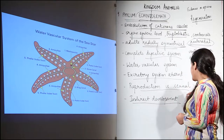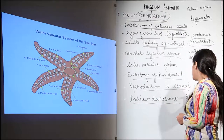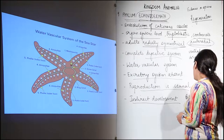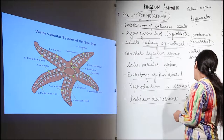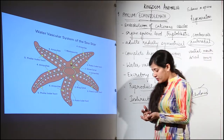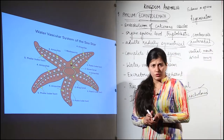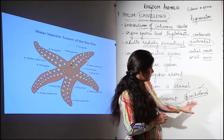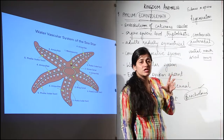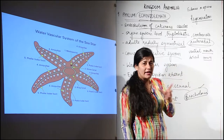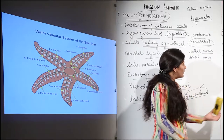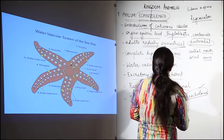They have indirect development. As mentioned, the larva is bilaterally symmetrical, and it is called the brachiolaria larva. If you can remember the name, that's great — even if you can't, associate that the brachiolaria larva is the one showing bilateral symmetry in echinoderms.